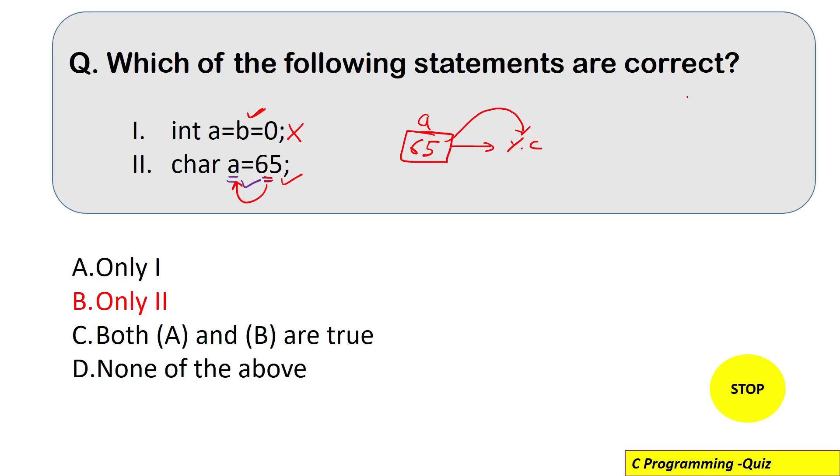So you know the concept of ASCII value. Each and every character inside C language has a unique integer value associated with it which is called ASCII value. So for example your capital A has ASCII value 65. Capital B has ASCII value 66 and so on.